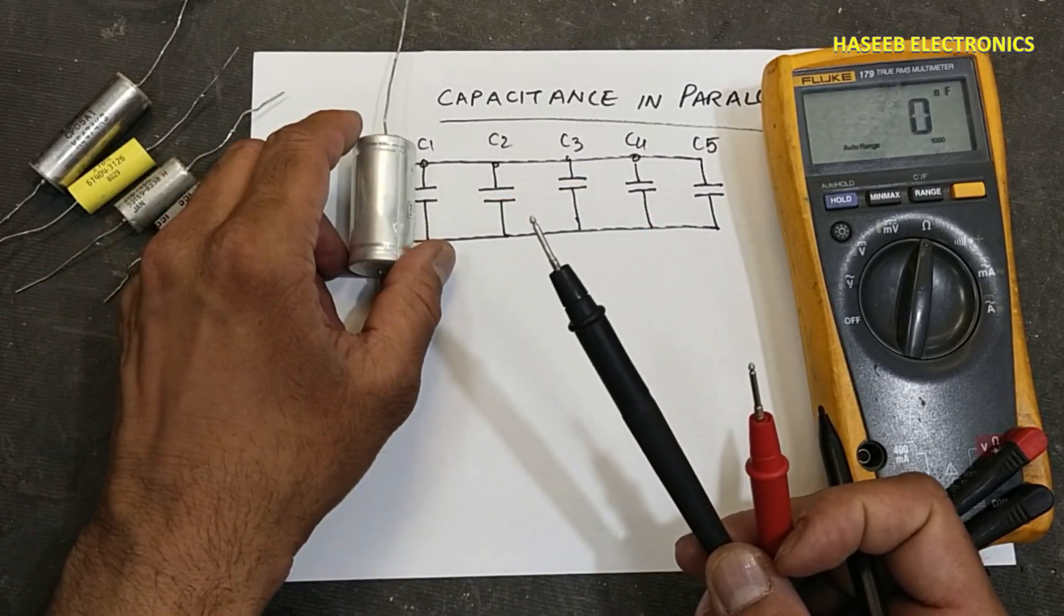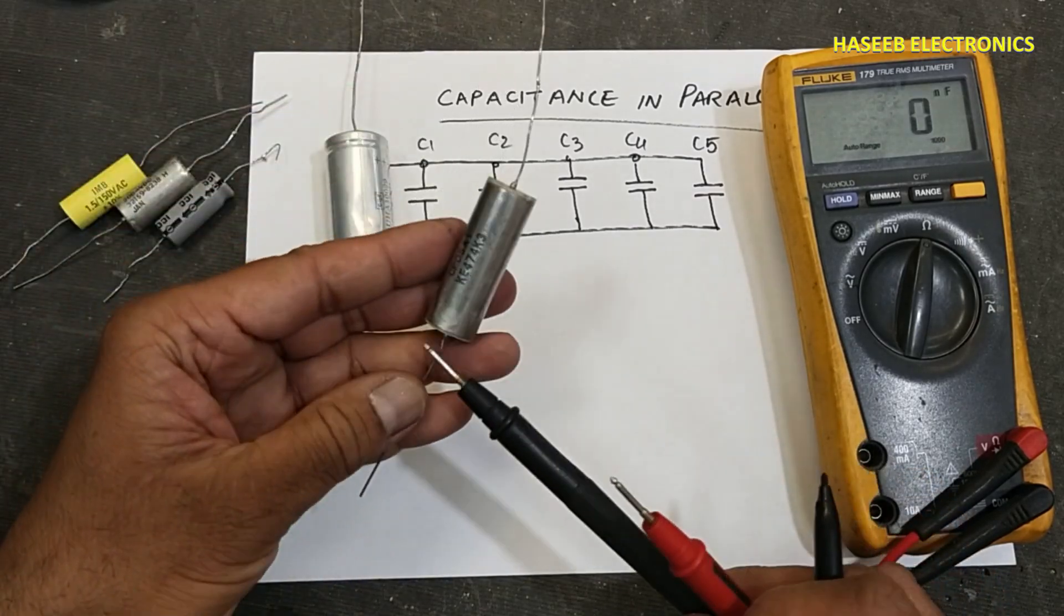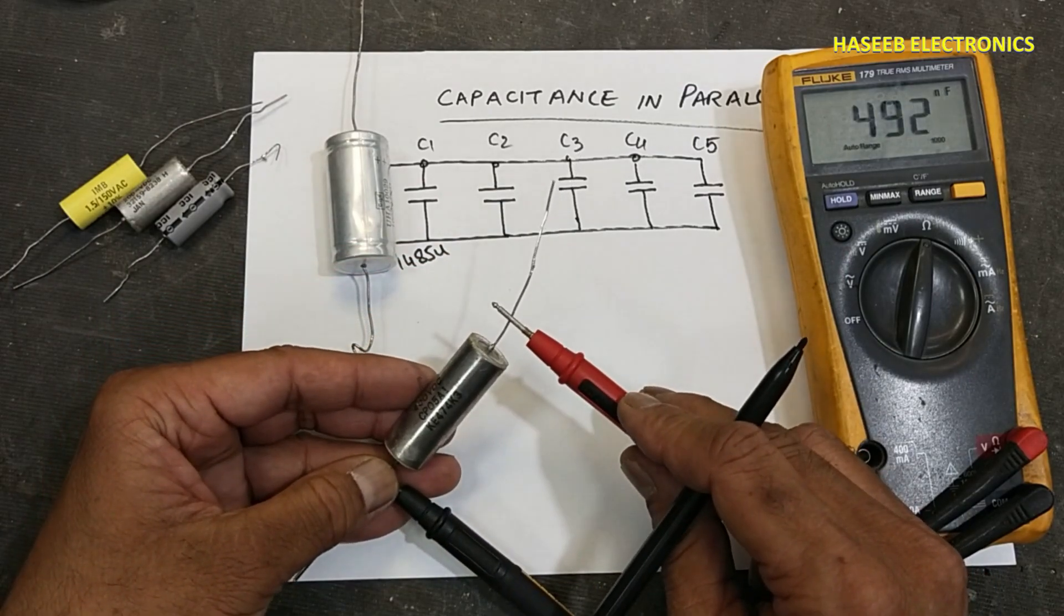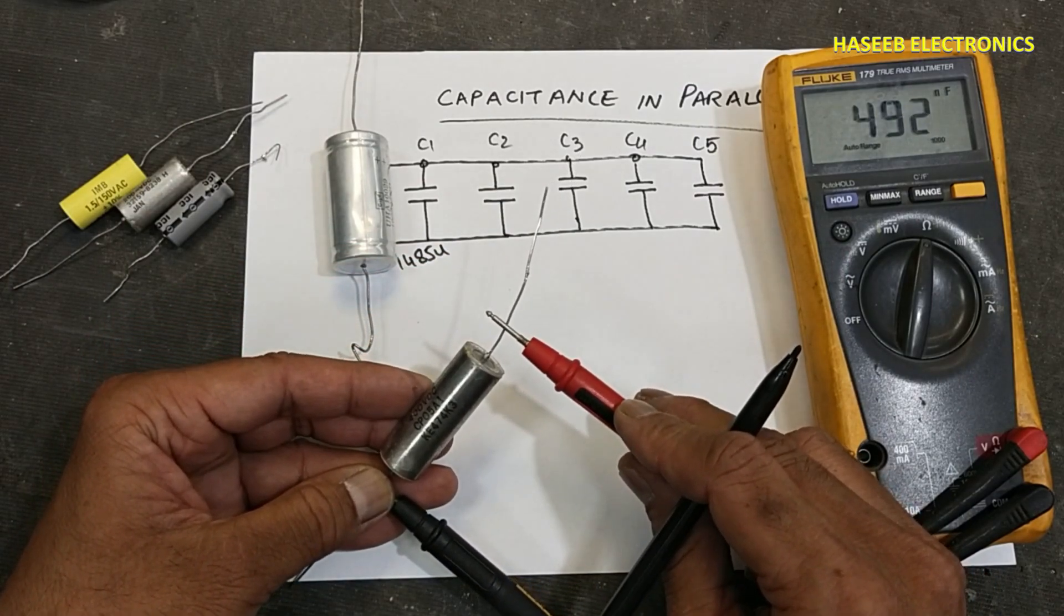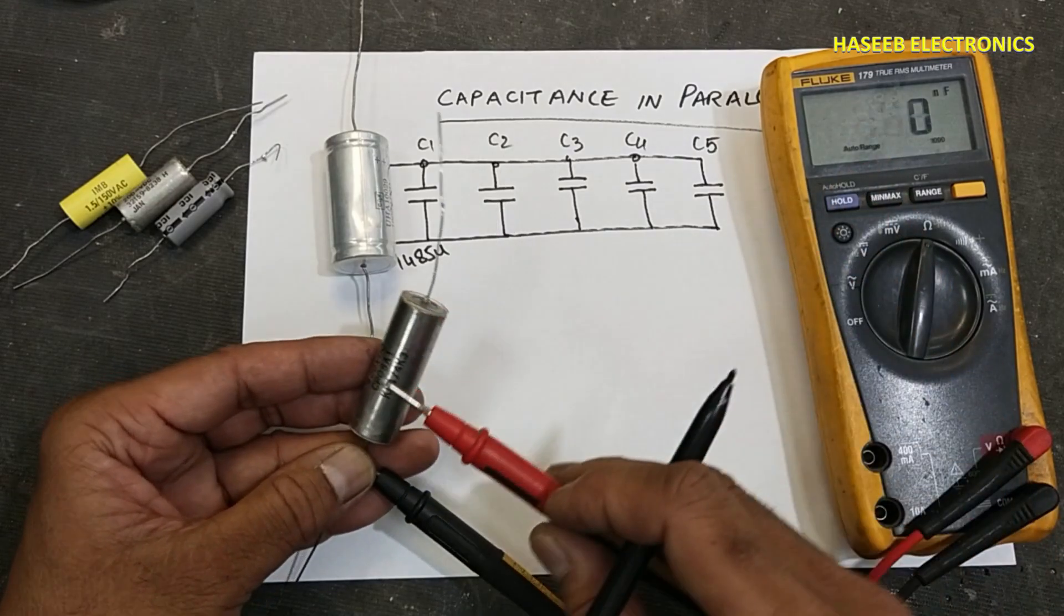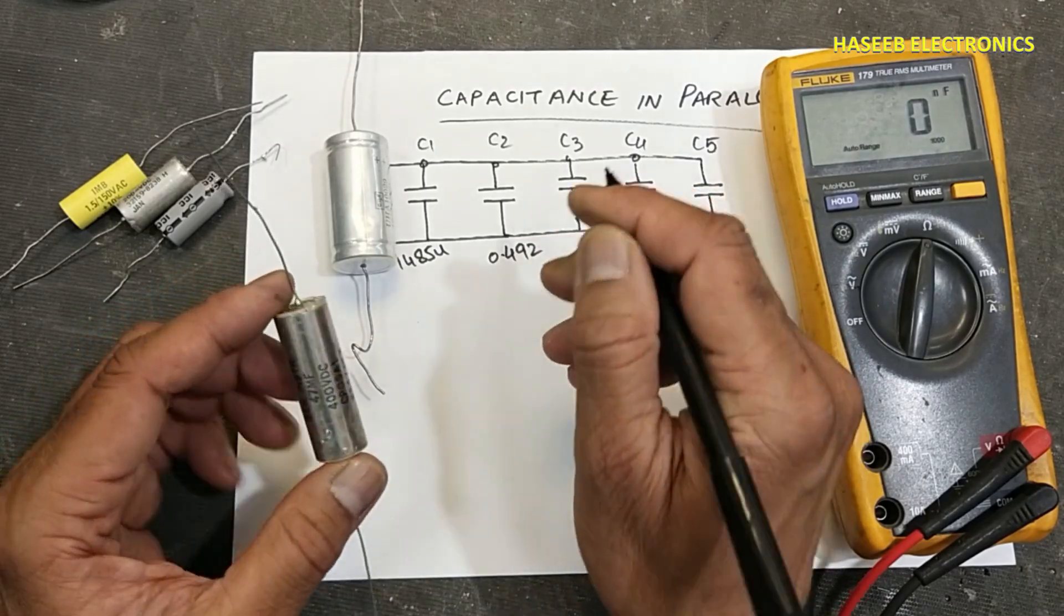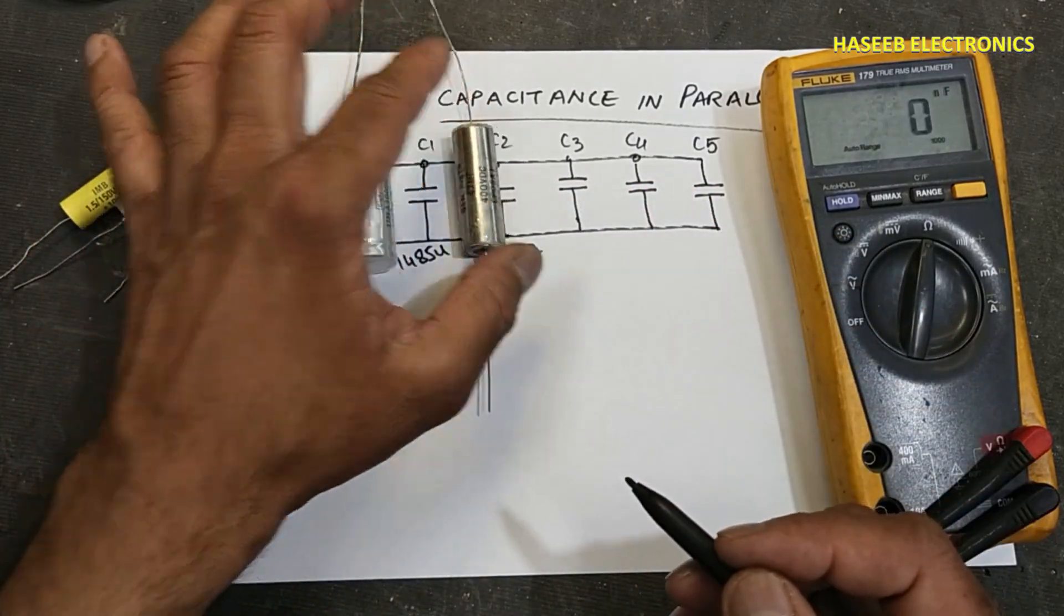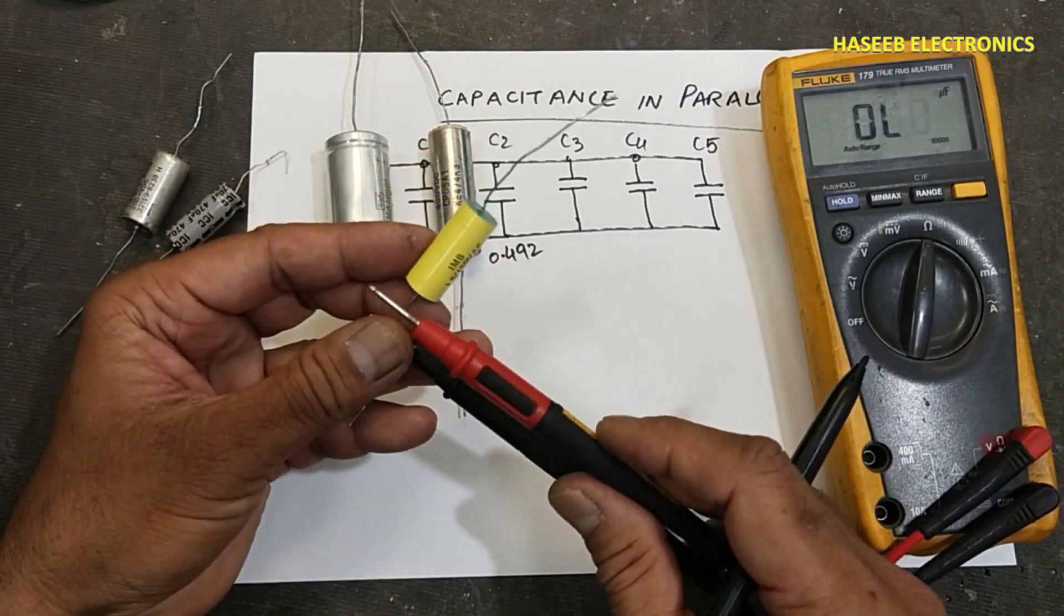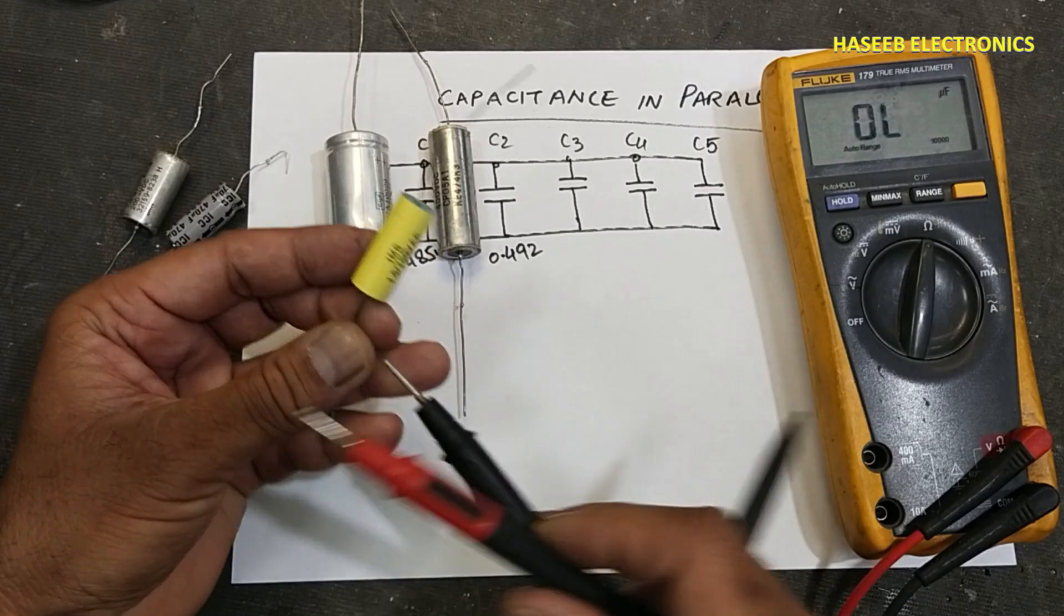The capacitor value must be in the same units. If you are considering microfarad, then the capacitor must be micro. Here it's 492 nano, which is 0.492 micro. We will convert nano into micro. Then 1.5, it is 1.54 microfarad.